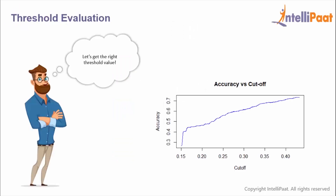In the previous sessions we gave some arbitrary values for the threshold, but that is not the right way. To get the best accuracy we need to get that perfect threshold value, so we need to plot a graph of accuracy vs cutoff. There's a package called ROCR in R which helps us get this threshold value.